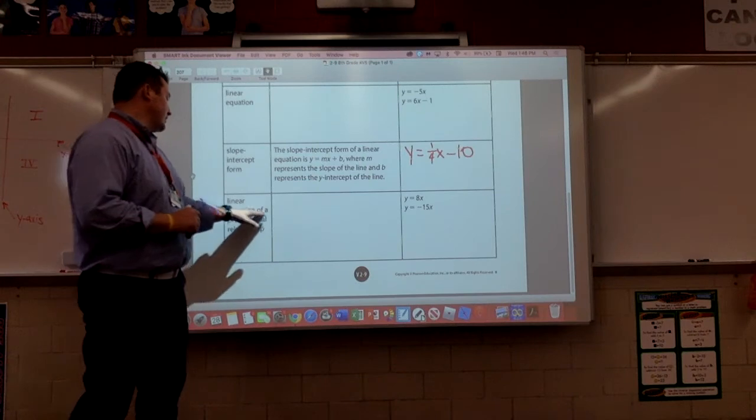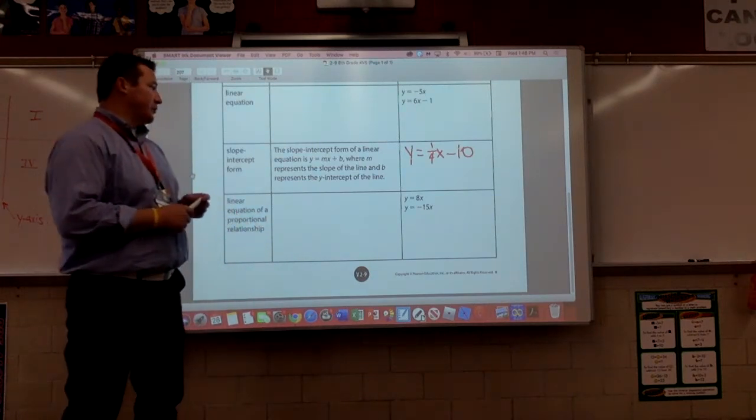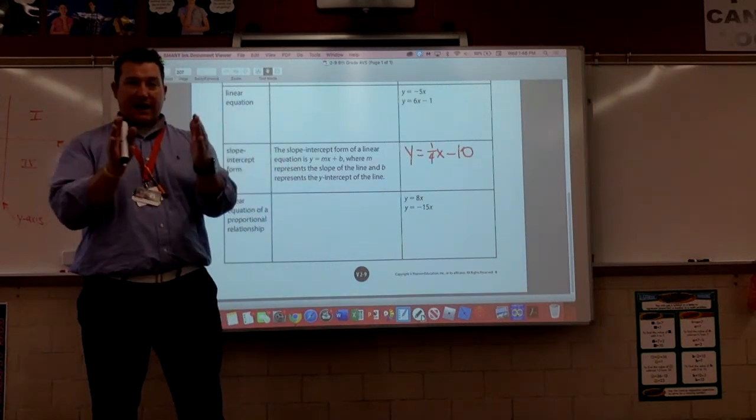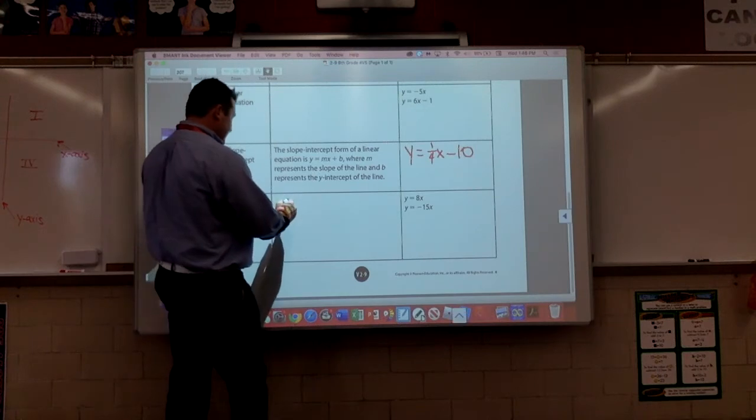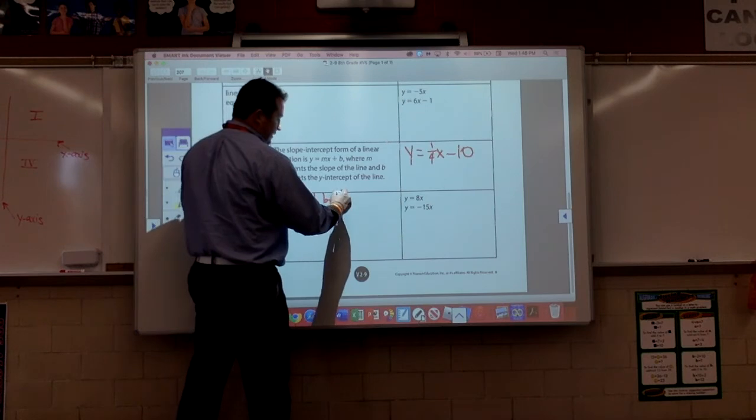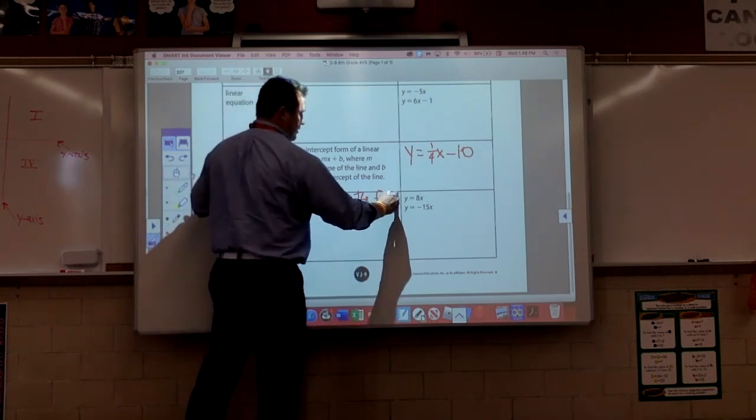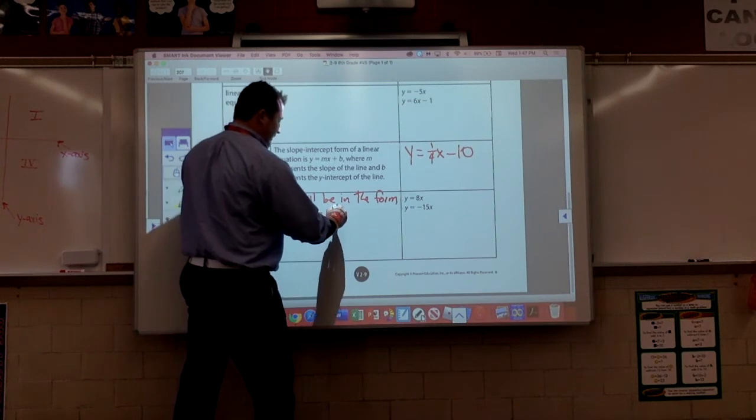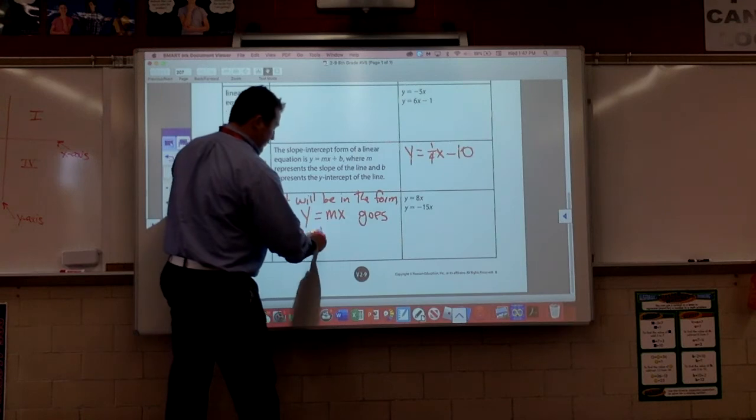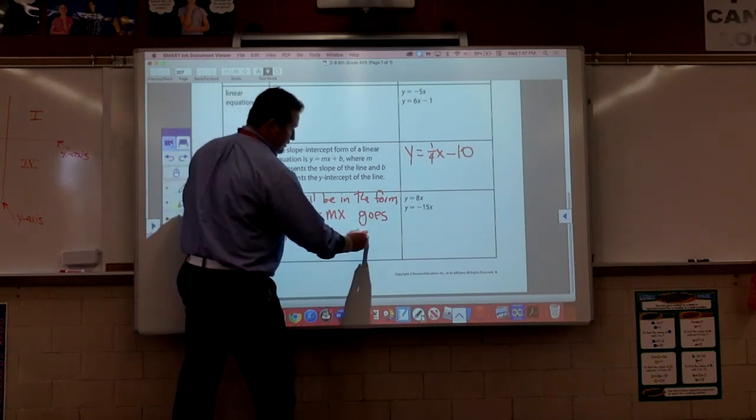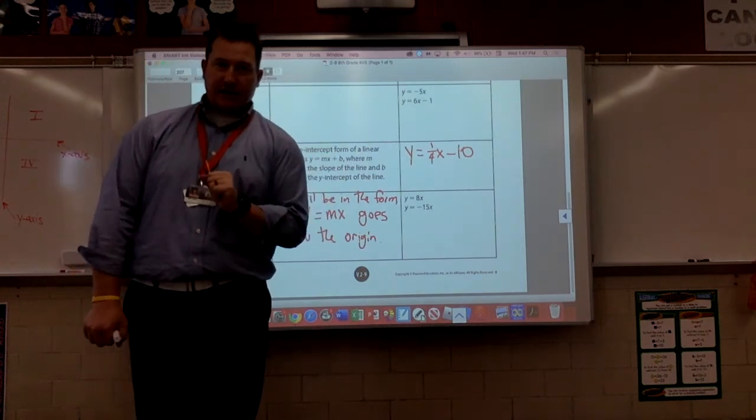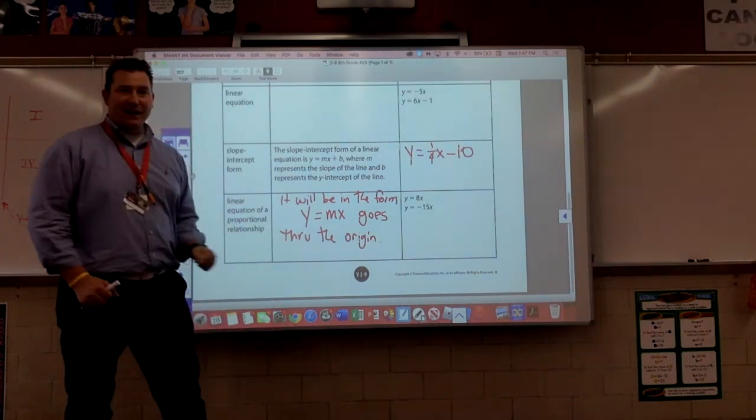Linear equation of a proportional relationship. So, a linear equation, guys, of a proportional relationship is like half of our slope-intercept form. This is, I'll just say it will be in the form y equals mx. What does it do that's special? It goes through the origin always. And once again, this is also a straight line. You can add that on there if you'd like.